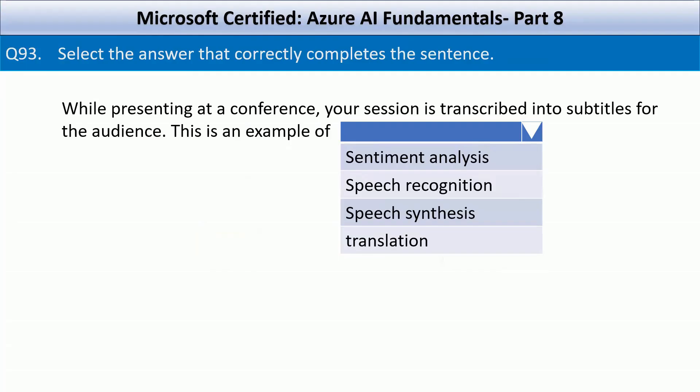Question number 93. Select the answer that correctly completes the sentence. While presenting at a conference, your session is transcribed into subtitles for the audience. This is an example of — your options are sentiment analysis, speech recognition, speech synthesis, translation. When your spoken words are transcribed into subtitles, the process involves converting speech into text in real time. This is a core function of speech recognition.